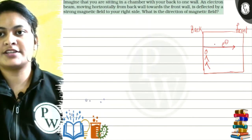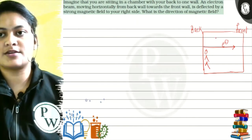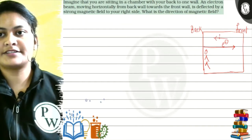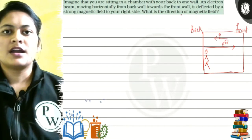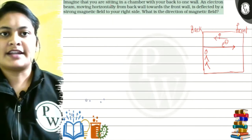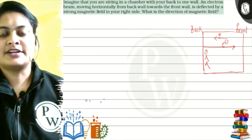If the electron is going here, what is the current direction? Just the opposite. Current direction. So, it is deflected by a strong magnetic field to your right side.